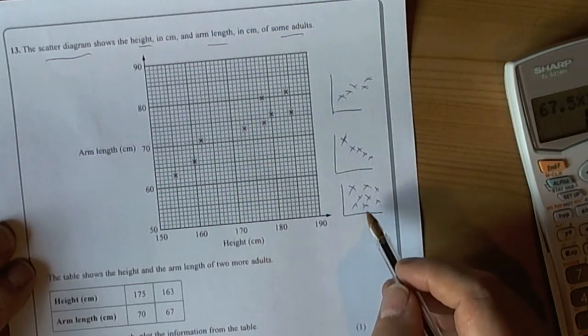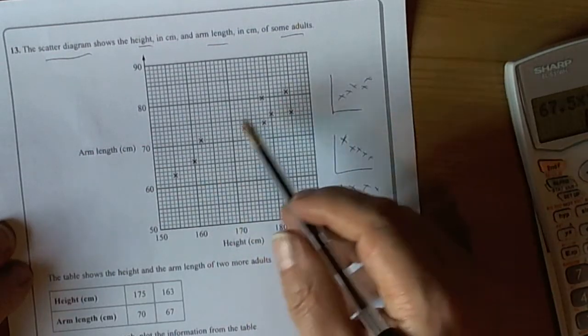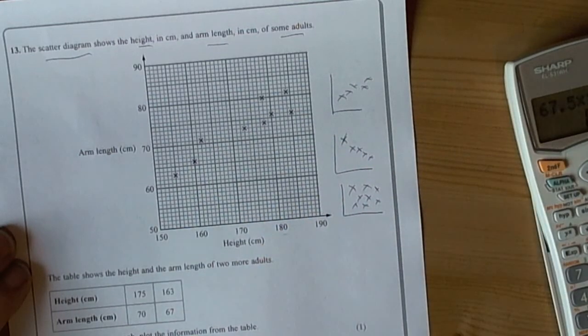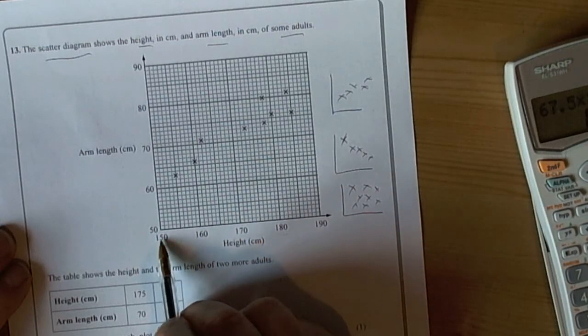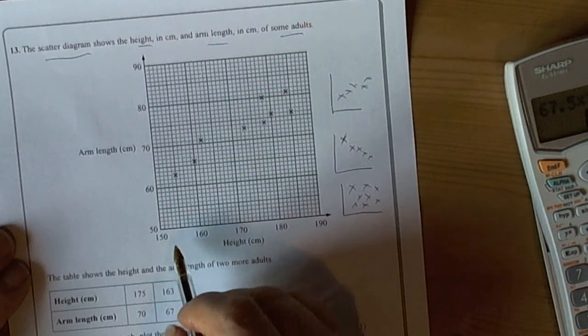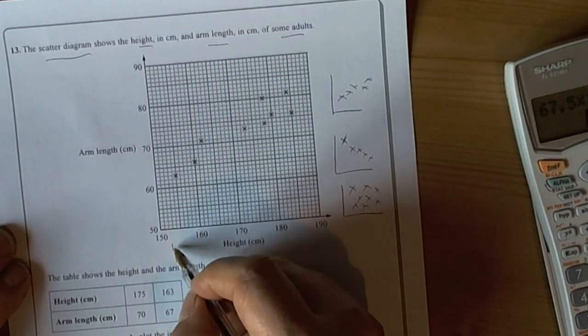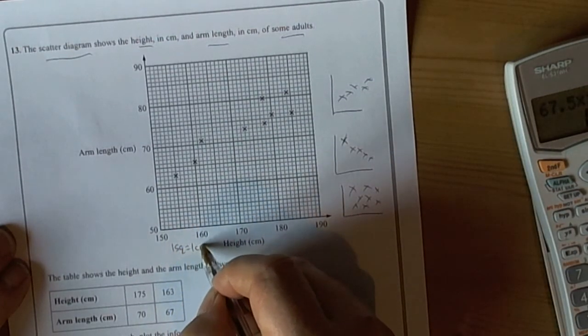So like with all graph questions, the first thing to sort out is the scales that have been used for the axes. So we can see along the bottom axis here that for every ten centimeters then we've got ten little squares. So one little square is worth one centimeter.